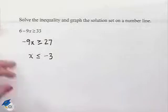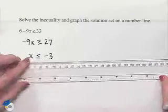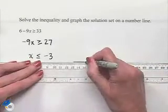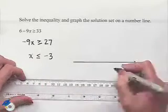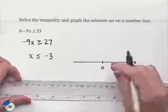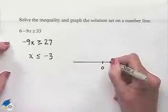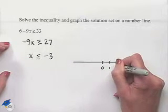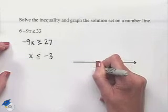Now to graph this, we're going to draw a number line. On that number line, let's designate our value of 0. To the right, we would have positive values. To the left, we'll have negative values.